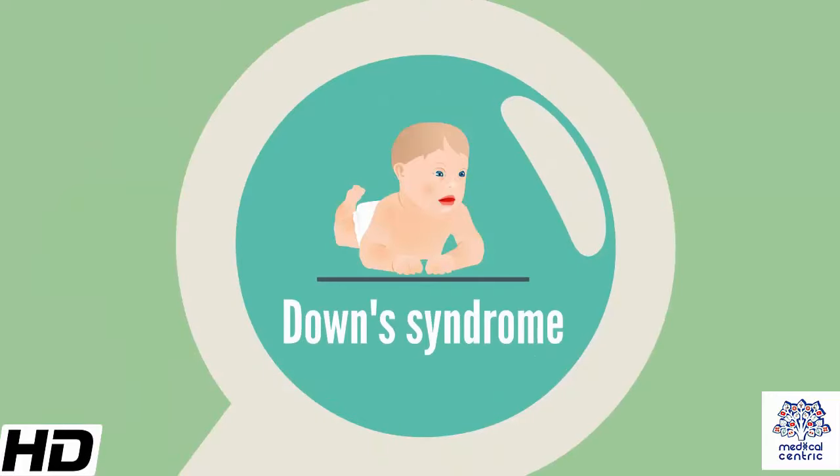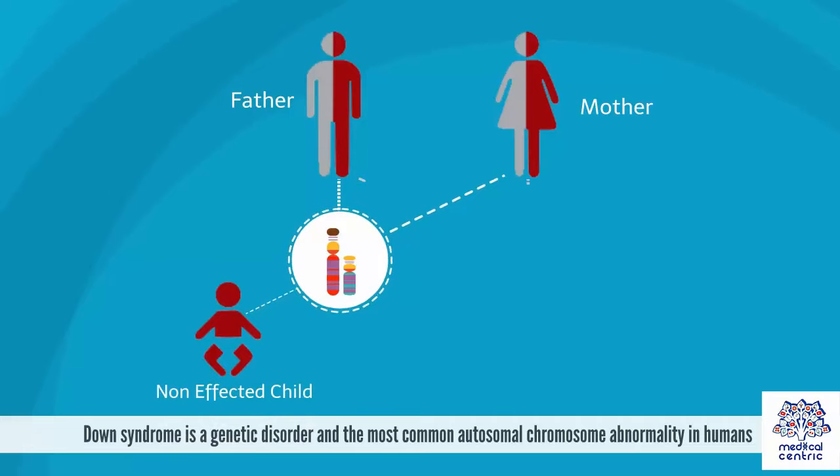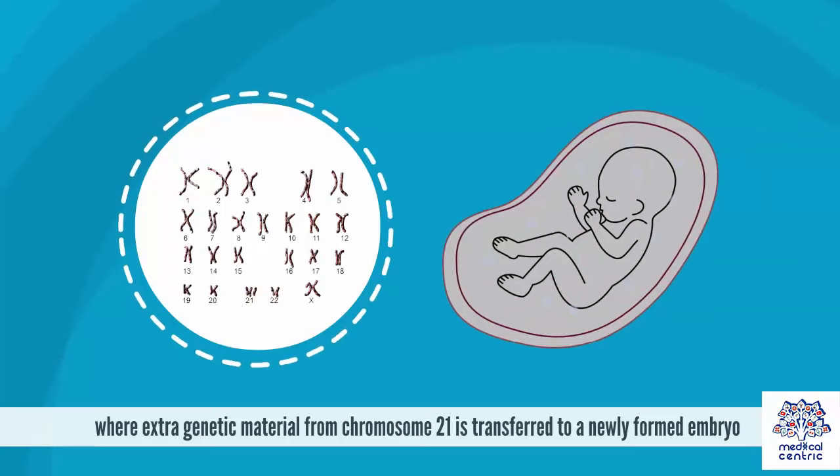Today's topic is Down syndrome. Down syndrome is a genetic disorder and the most common autosomal chromosome abnormality in humans, where extra genetic material from chromosome 21 is transferred to a newly formed embryo.